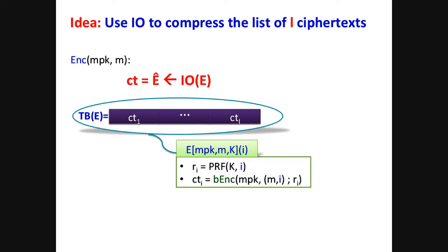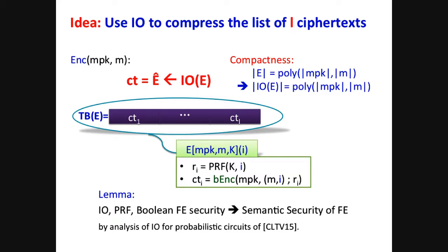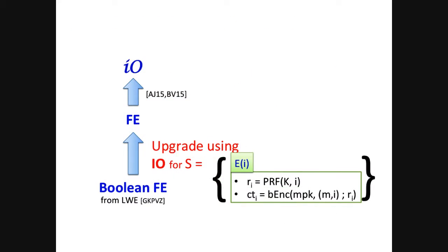How? We're going to view this list of ciphertexts as the output or as the truth table of a certain circuit E. How does it look like? It's going to have the public key and message hardwired in. And on input only the index I, it will produce the I-th ciphertext by encrypting the pair M,I using the Boolean scheme. And additionally, it will generate the randomness needed for the encryption by evaluating a PRF. Now, instead of trying to publish this whole list of ciphertexts, which is very long, let's just obfuscate this circuit E, which can then allow us to reproduce every ciphertext we need. Now, compactness is restored immediately. Why? Because the circuit E has a compact size, and therefore, its obfuscated version as the ciphertext.